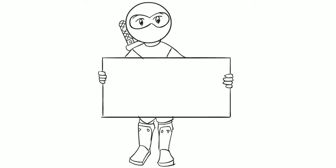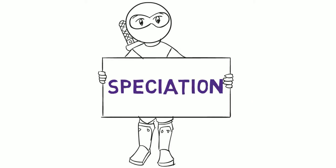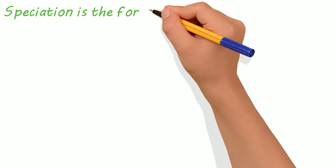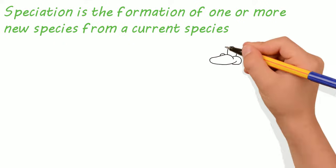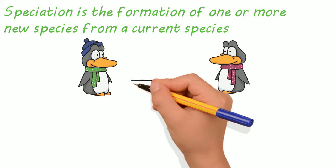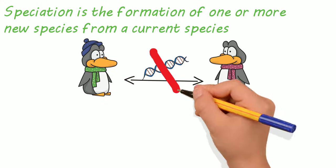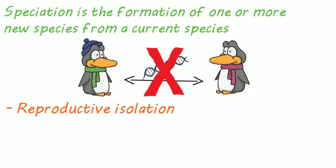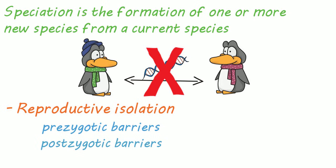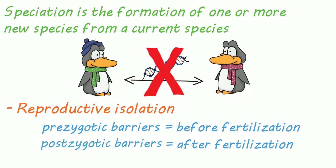Today we are talking about speciation. Speciation is the formation of one or more new unique species from a current species. In order for one species to split into two or more, a faction within the species must not share its genetic information with the rest of the species. This is called reproductive isolation, and there are two main categories: pre-zygotic barriers and post-zygotic barriers, named for whether they occur before or after fertilization.